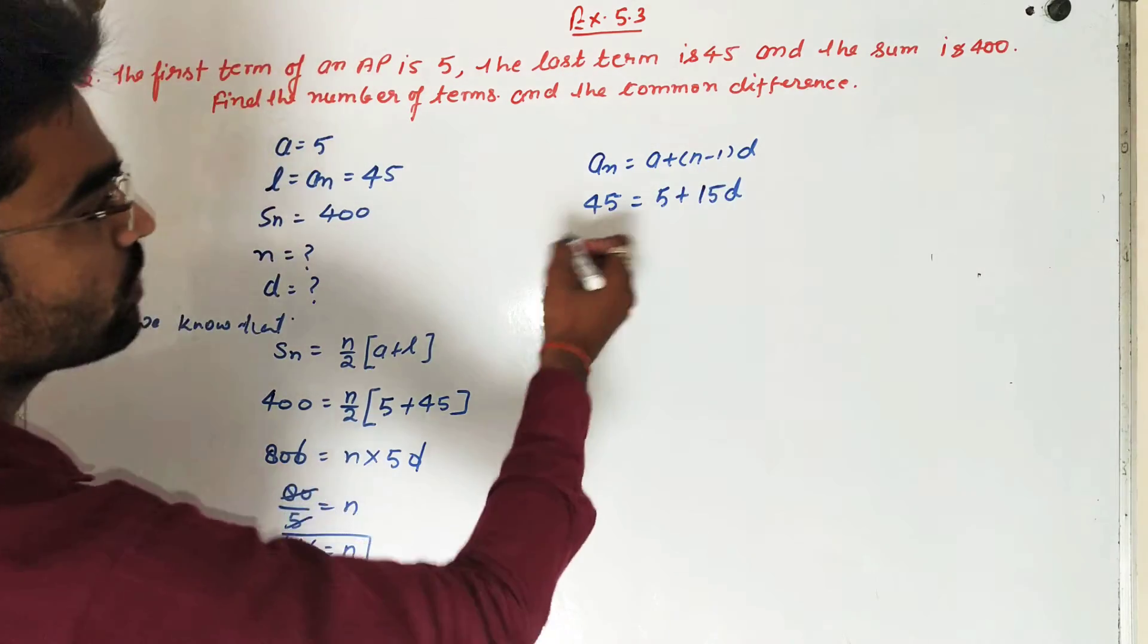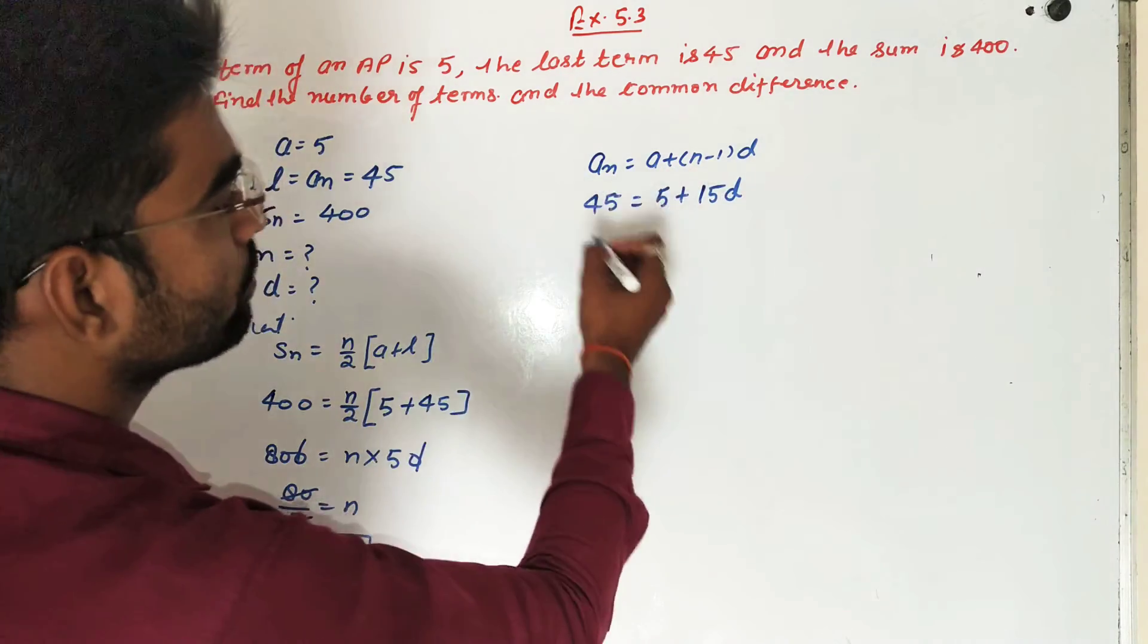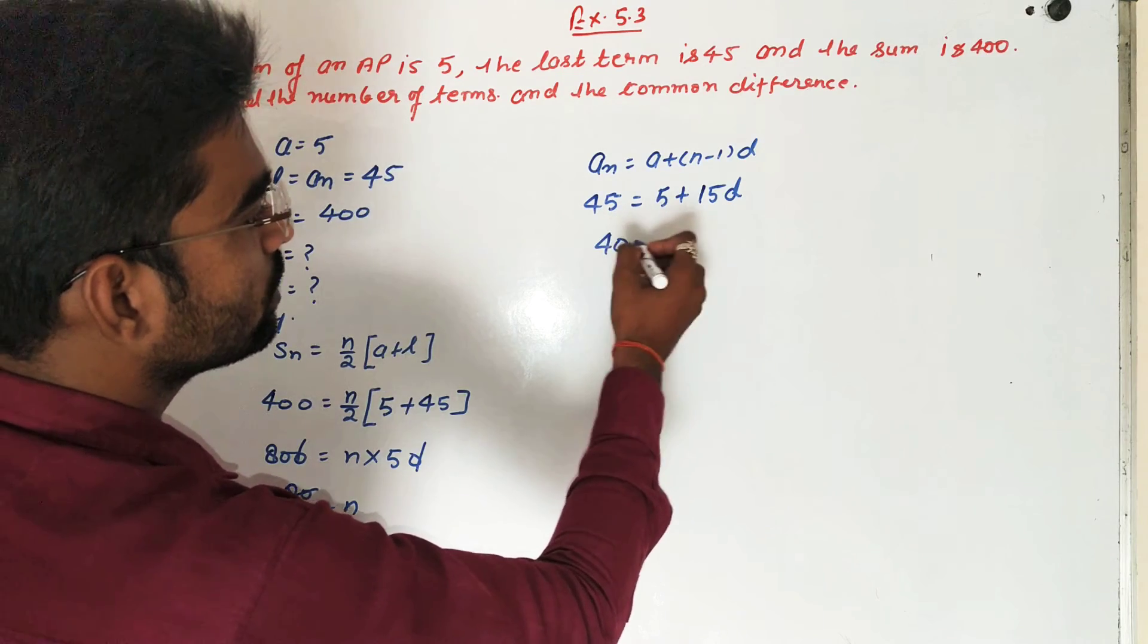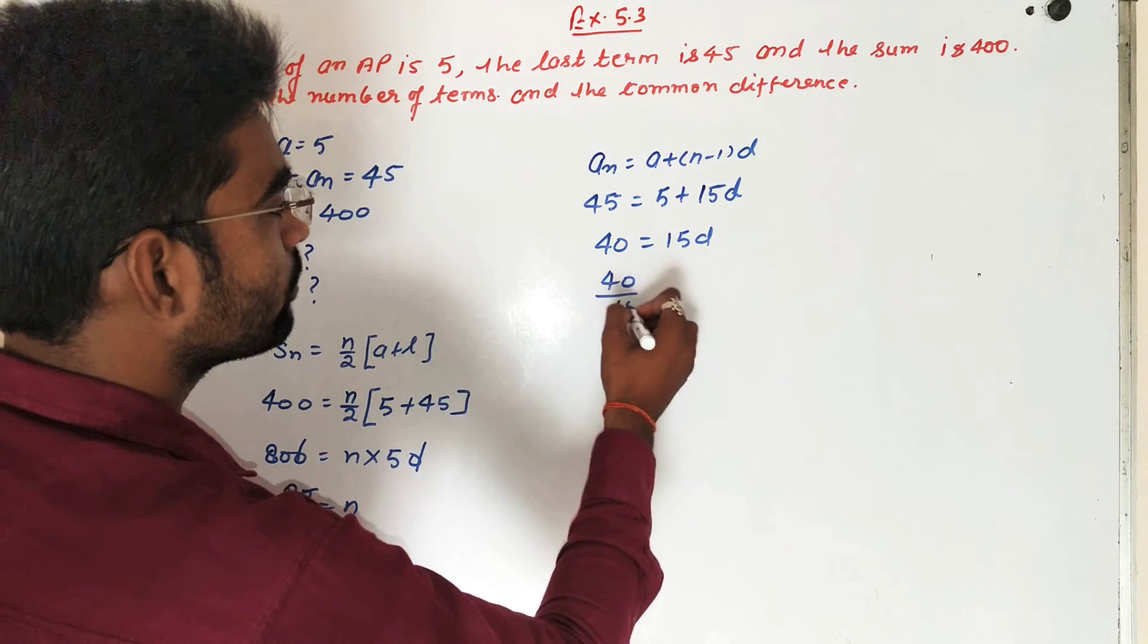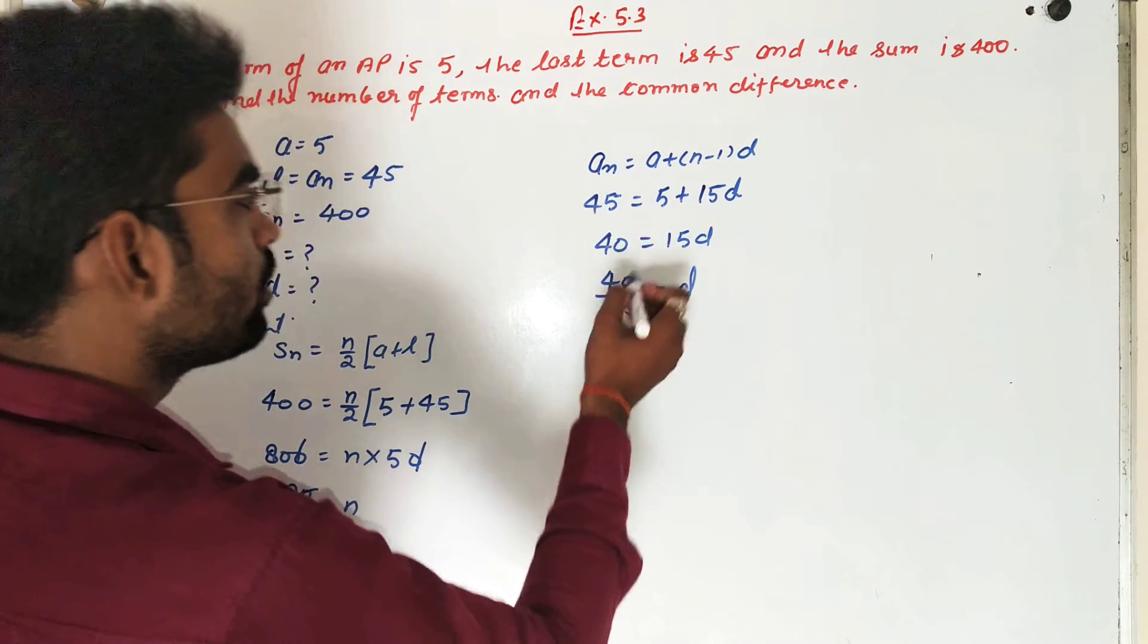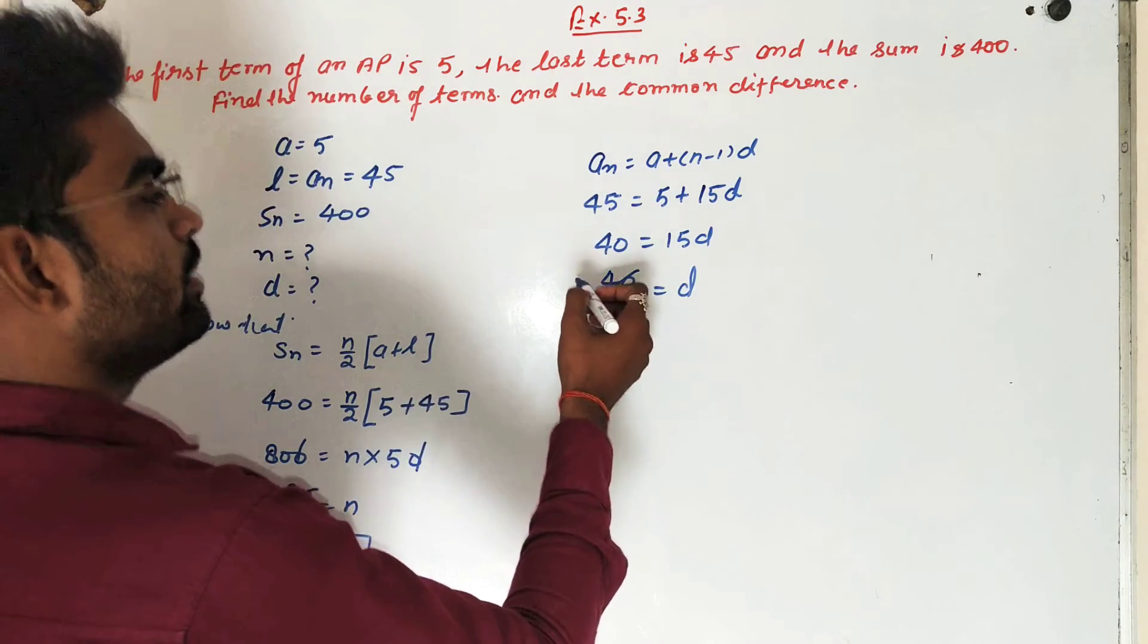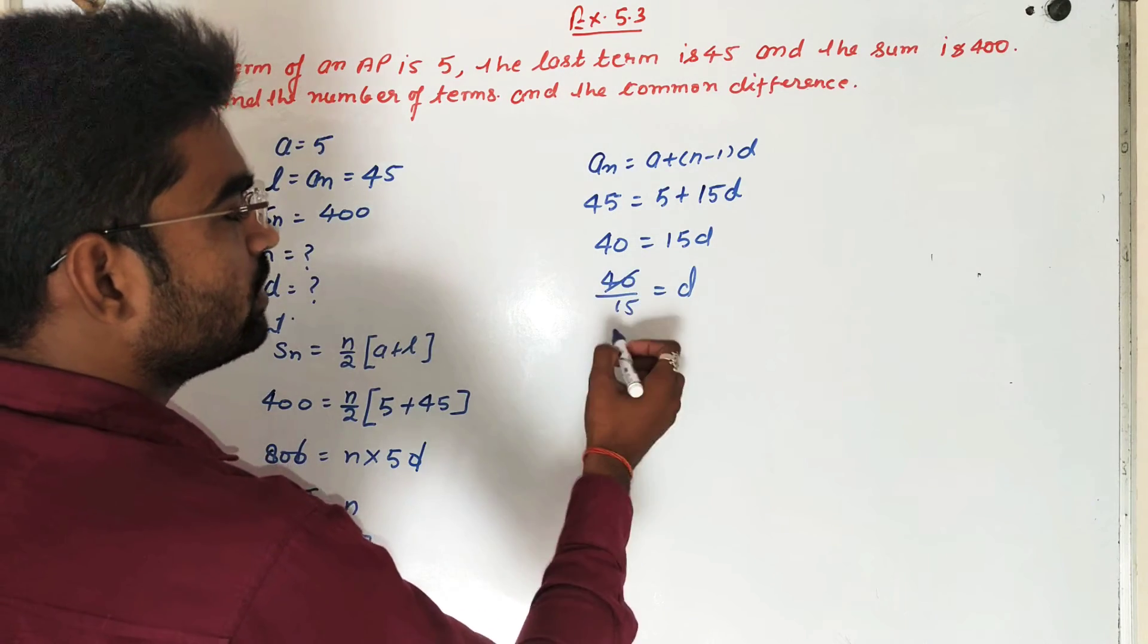Transfer: 45 minus 5, that means 40 is equal to 15D. And D is equal to 40 upon 15.